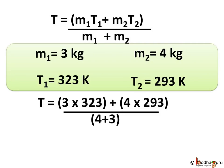Now everything is in SI units. Here M1 equals 3 kg, M2 equals 4 kg, T1 equals 323 Kelvin and T2 equals 293 Kelvin. The final temperature denoted by T would be 3 multiplied by 323 plus 4 multiplied by 293 whole divided by 4 plus 3.